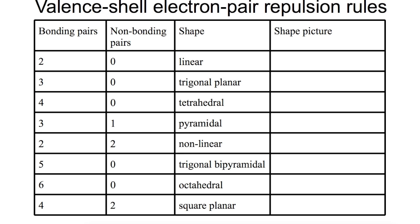I'm going to fill in this table here to show you the pictures for each of the shapes and explain how those shapes arise. Another really good resource to have a look at is the Compound Chemistry website, where there's a great infographic that explains more of the valence shell electron pair rules.